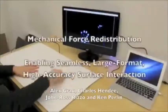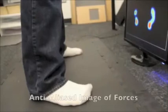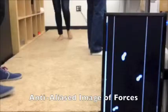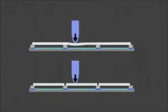Mechanical force redistribution, or MFR, is a method of sensing which creates an anti-aliased image of forces applied to a surface. In MFR, forces are distributed to protrusions in contact with discrete force sensing cells, called forsels.